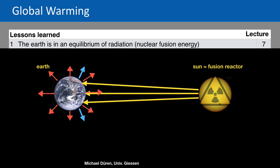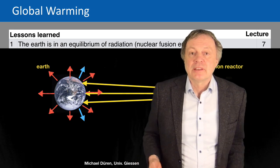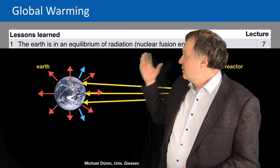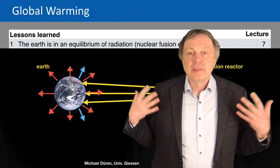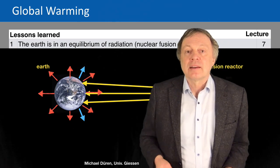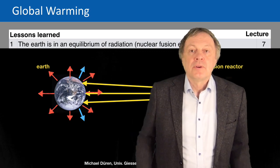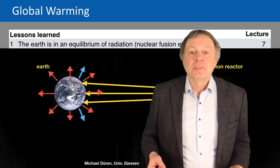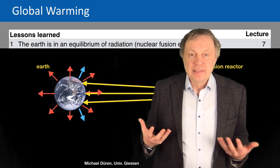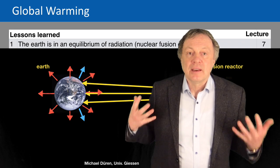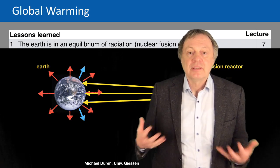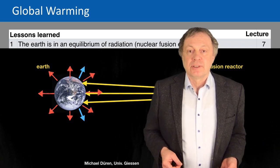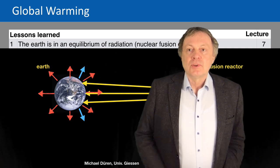And then the earth becomes warmer and warmer and then it irradiates infrared radiation, so heat radiation, and this is the way the earth cools down. In addition, these blue arrows there indicate that blue light and other kinds of light are reflected from the atmosphere and from the oceans. There is an equilibrium state and this is the basics of the radiation equilibrium of the earth, which defines the basic temperature of the earth. This was in lecture 7.